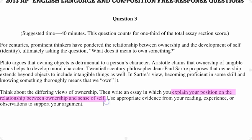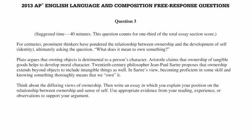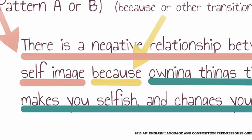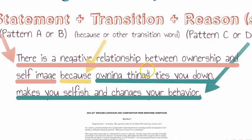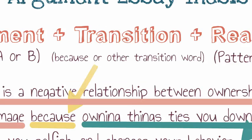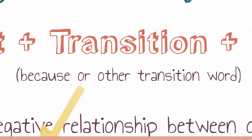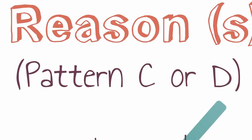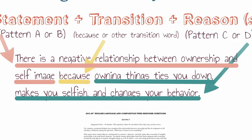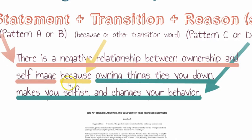Here's what it looks like to write a thesis statement for an argument essay like this one. The statement portion clearly states our position: 'There is a negative relationship between ownership and self-image.' Then you have a transition word — usually 'because' works best on this essay: 'There is a negative relationship between ownership and self-image because' — and then finally you list your reasons: 'There is a negative relationship between ownership and self-image because owning things ties you down, makes you selfish, and changes your behavior.'